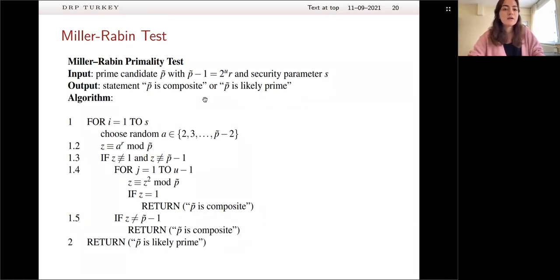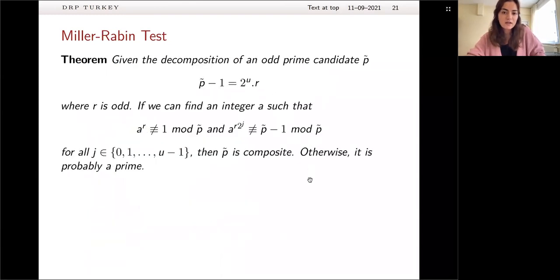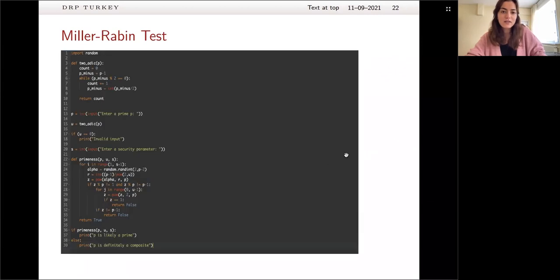And as an output of these primality tests, it says that P tilde is composite or P tilde is likely prime. So, Miller-Rabin is not a definite algorithm, it's a probabilistic algorithm, because it says that it's likely prime. So, even if our security parameter is really high, it is still not that reliable, it's not that precise, because it's a probabilistic algorithm. So, I'm skipping the algorithm, because we already written one.